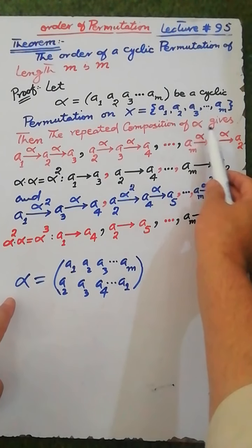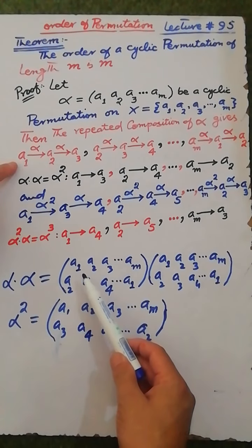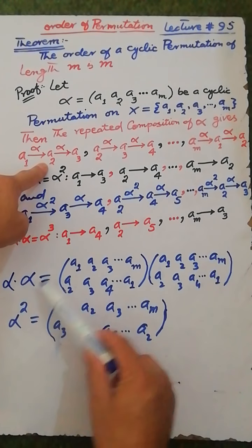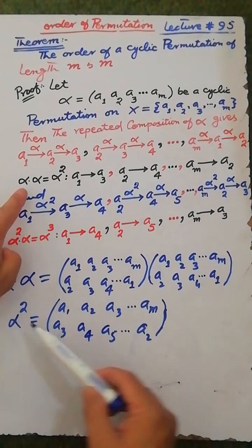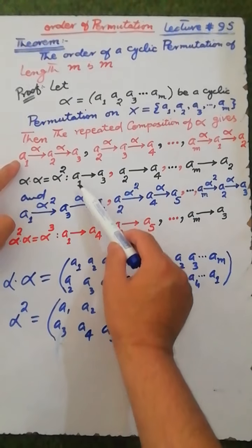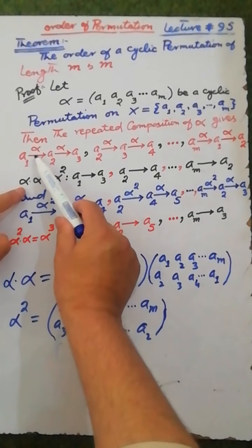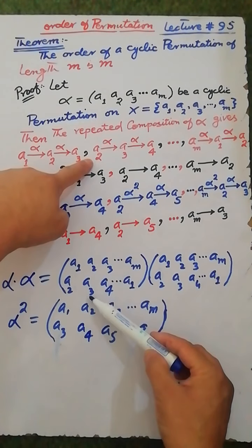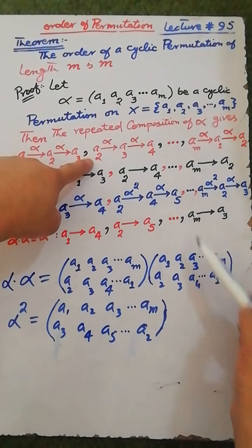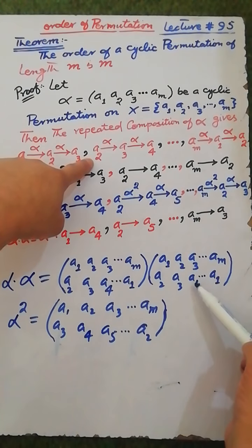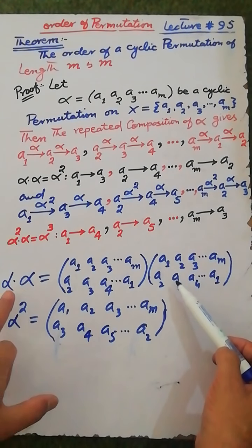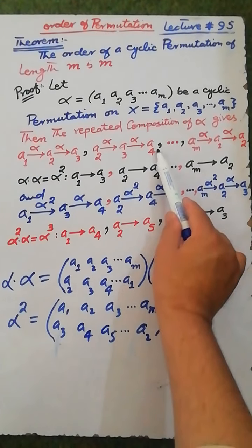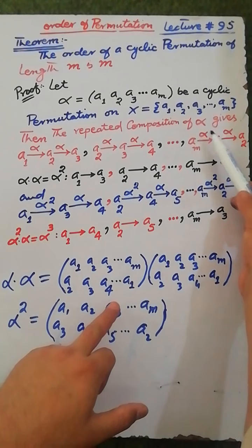The repeated composition of permutation alpha gives: under alpha, a1 maps to a2, and again under alpha, a2 maps to a3. Therefore alpha squared maps a1 to a3. Similarly, under alpha, a2 maps to a3, and under alpha, a3 maps to a4. Therefore alpha squared maps a2 to a4, and so on.